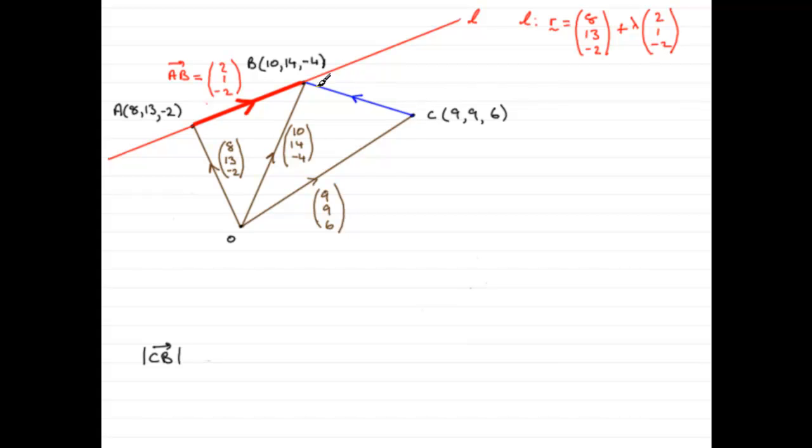How do we get this length? First of all, we need to establish what the vector C to B is, so in the usual way, C to B is going to be equal to O to the last letter, O to B, minus O to the first letter, O to C.